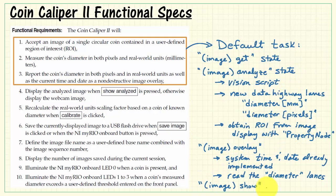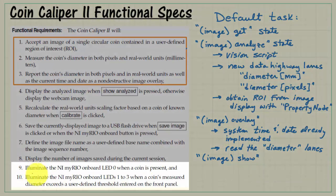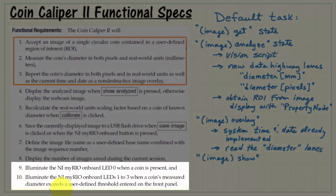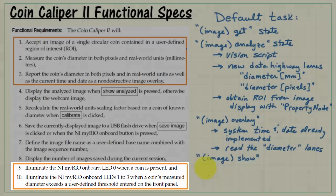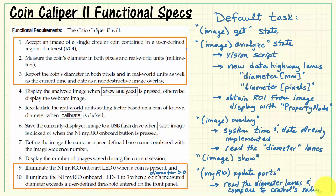After creating the non-destructive image overlay, use the image show state to update the main image display on the front panel. Take a look at specifications 9 and 10: illuminate the NI MyRio onboard LEDs under these conditions. These are also associated with part of the default task. Use the MyRio update port state for this purpose. When a coin is present — that is, when its diameter is greater than zero — we use that information to activate LED zero. When the coin's measured diameter exceeds a user-defined threshold, then we activate the remaining three LEDs.